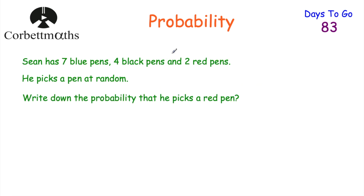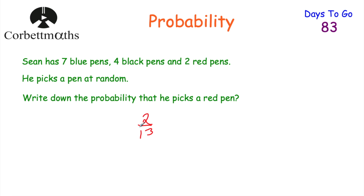Here's one for you to try. Sean has seven blue pens, four black pens, and two red pens. He picks a pen at random. Write down the probability that he picks a red pen. Pause the video now to try this question. First, find the total number of pens: seven plus four is 11, plus two is 13. He's got 13 pens altogether, two of which are red. So the probability of picking a red pen is two out of 13, or two thirteenths.